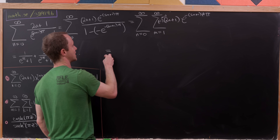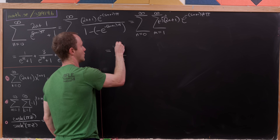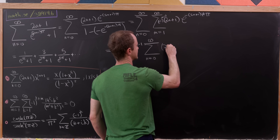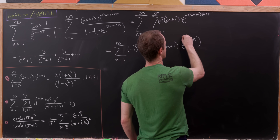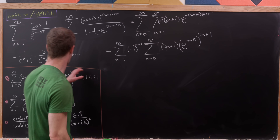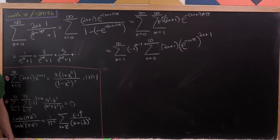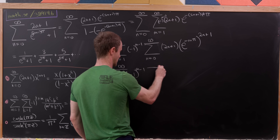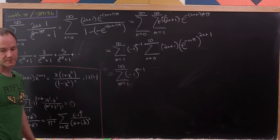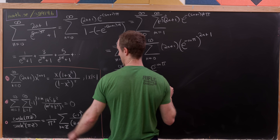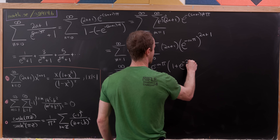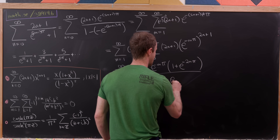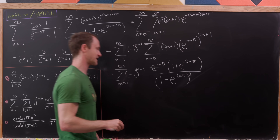Factoring and changing the order of summation, we get the sum as m goes from 1 to infinity of (−1)^(m−1), inside of which we have the sum as n goes from 0 to infinity of (2n+1) times [e^(−mπ)]^(2n+1). We wrote it that way so we can apply our first formula with x = e^(−mπ), giving us the sum as m goes from 1 to infinity of (−1)^(m−1) times e^(−mπ)·(1 + e^(−2mπ)) / (1 − e^(−2mπ))².